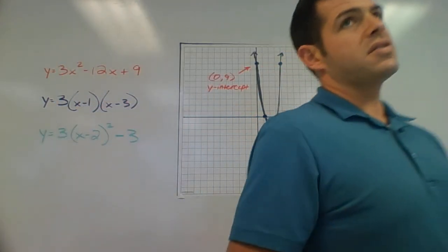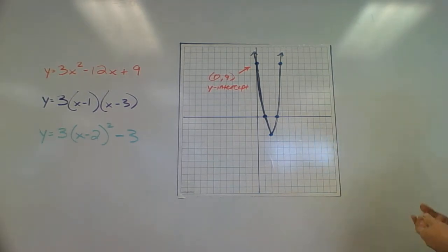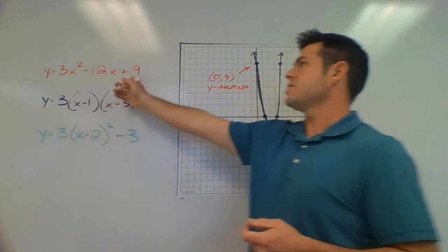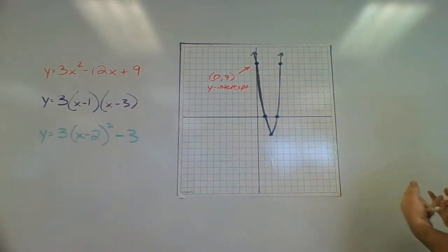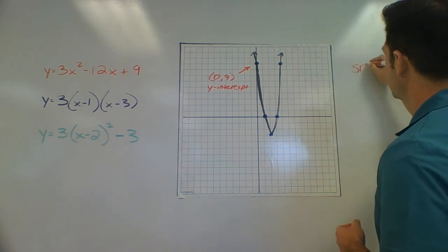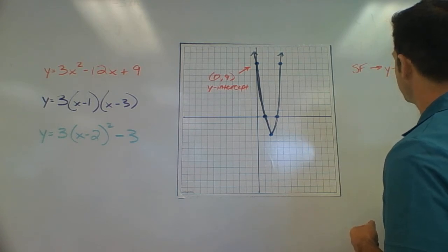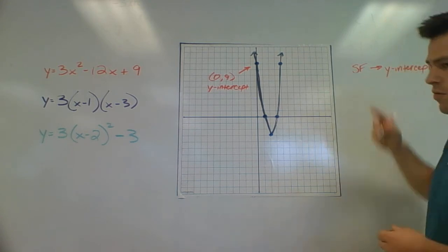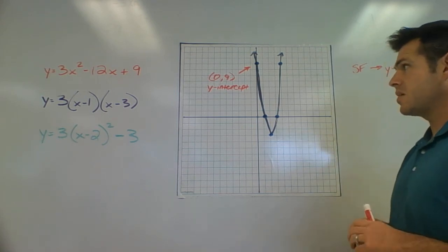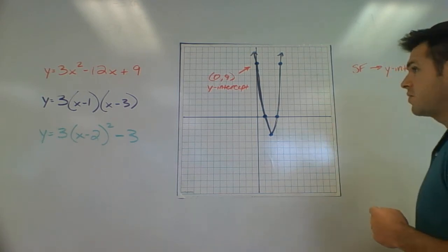So when it comes to standard form, we don't have to think too much about it, right? If I plug 0 in for x, that becomes 0, that becomes 0, that's the number 9. That constant in the back end of our standard form would give us the y-intercept. So I'll abbreviate over here. SF would be standard form. Very easy for us to see that just by looking at the function.